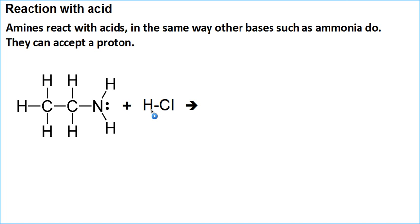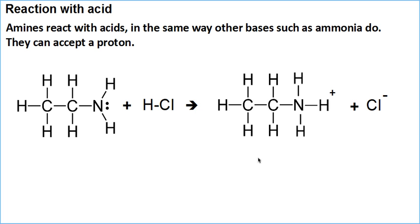That non-bonding pair of electrons forms the bond with the H+ because the hydrogen ion is not bringing an electron with it, so it can't donate an electron to the bond. Both electrons have to be on the nitrogen already. So once again we get that NH3 group forming on our amine.